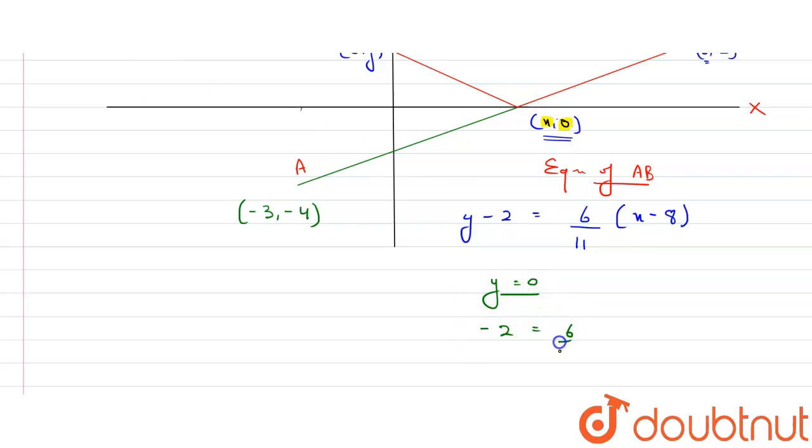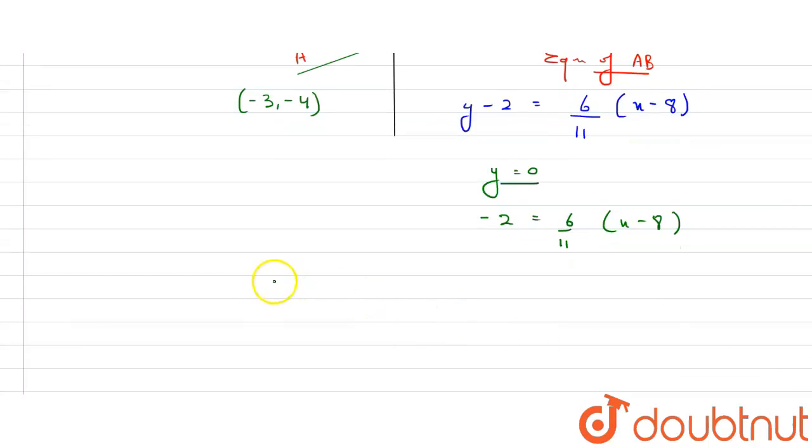Now let's solve this further. Here it will be -22 this side, and it will be 6x and -48. So value of 6x will be -22 and plus 48.